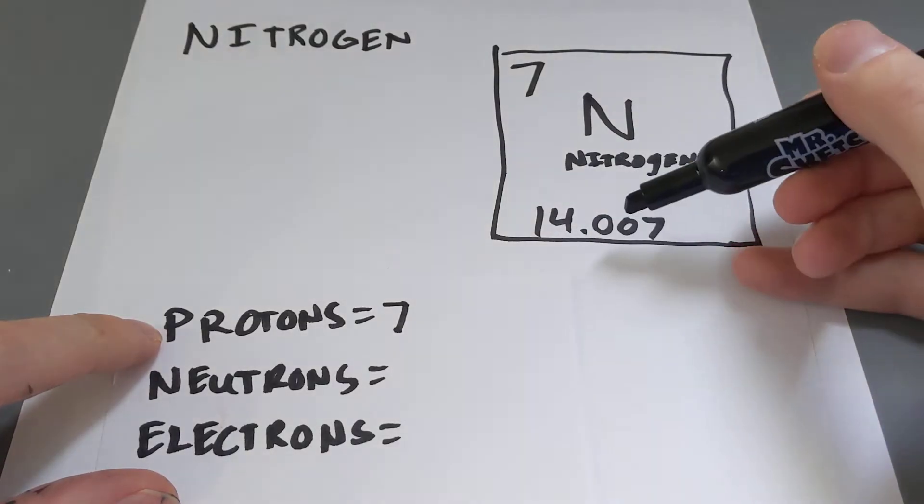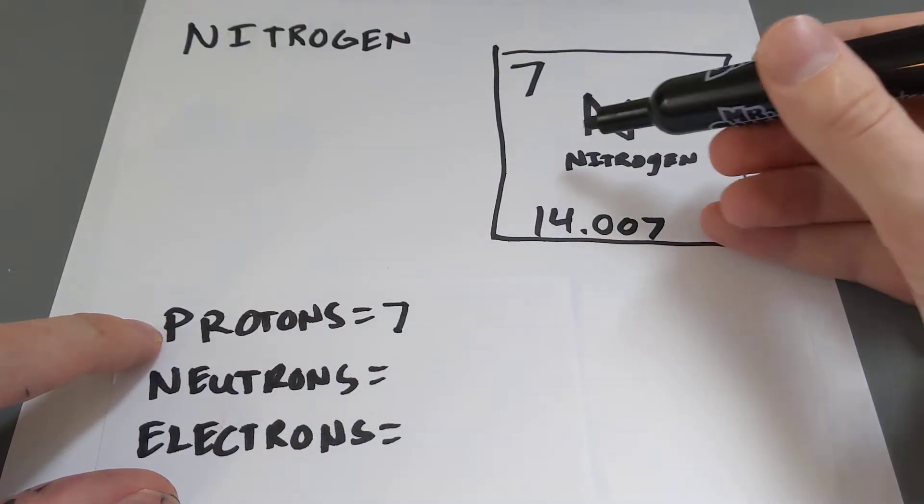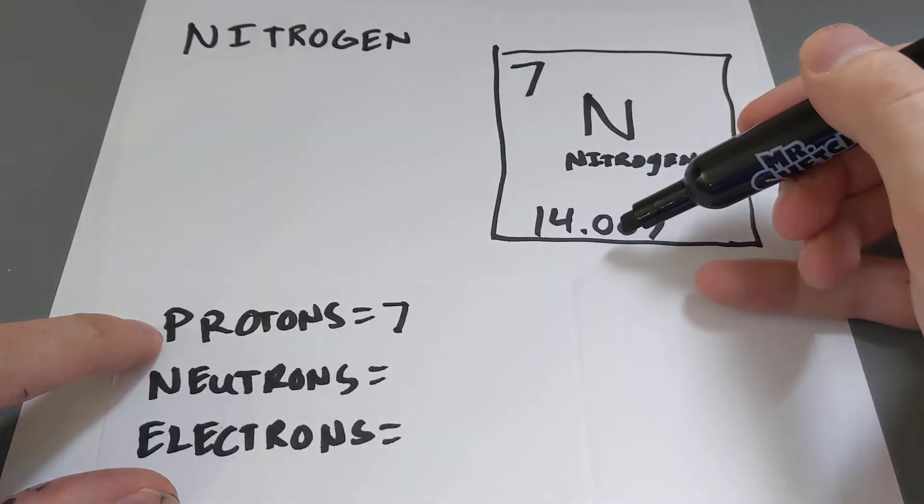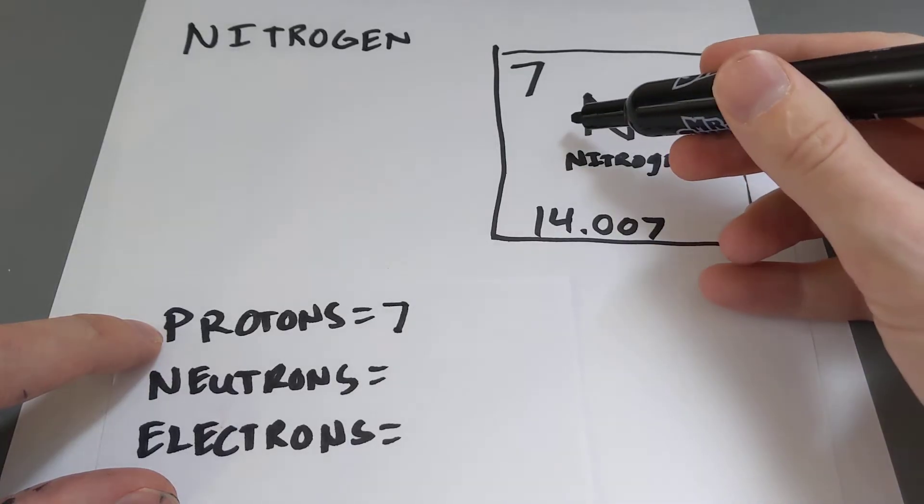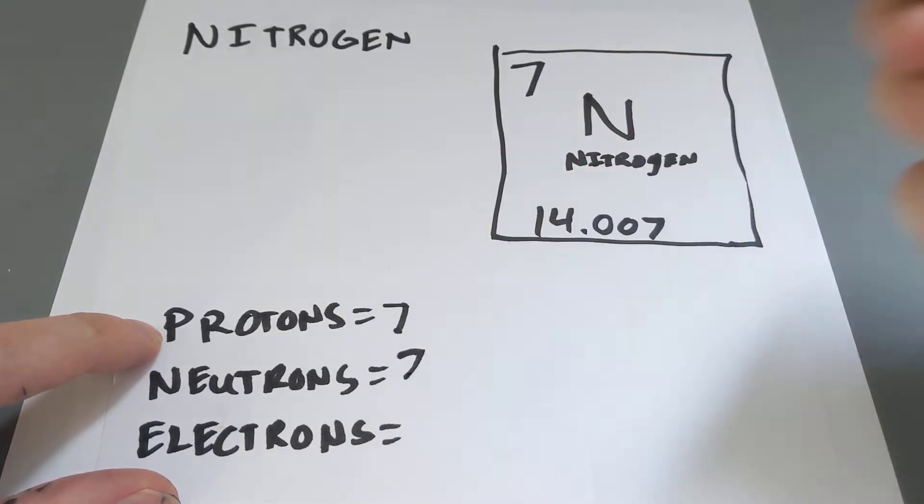To get the neutrons, you take your atomic mass or weight and subtract away your protons. So, 14, you can round down to 14, minus 7 will give you 7 neutrons.